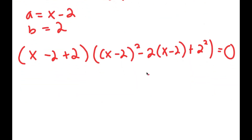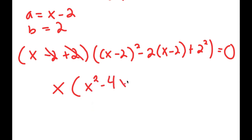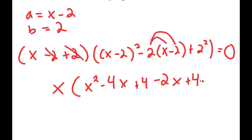Now we can simplify this. Negative 2 and positive 2 cancel out, so I get x times ((x minus 2) squared), which is the same as x squared minus 4x plus 4. Then negative 2 times (x minus 2): distributing, negative 2 times x is negative 2x, and negative 2 times negative 2 is positive 4. And finally, I have plus 2 squared, which is 4.